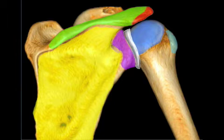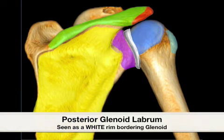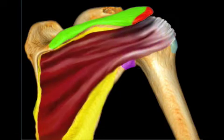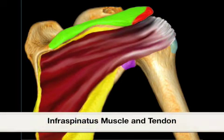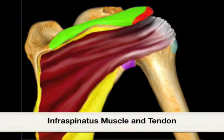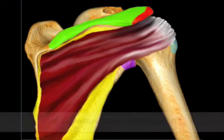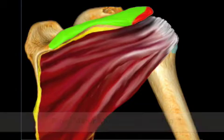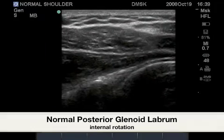The structure in white represents the posterior glenoid labrum, which is only clearly identified by ultrasound at its approximate 9 o'clock position. Overlying these structures is the large infraspinatus muscle and tendon, followed by the teres minor resting just inferior to the infraspinatus tendon.